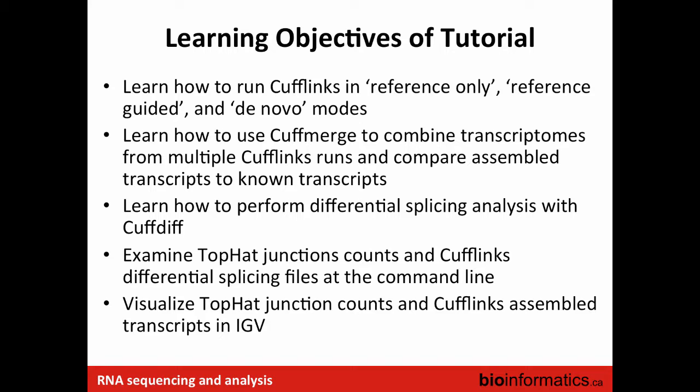The reference-only mode gave output close to one result per known transcript. Now we'll run Cufflinks again in two different ways: first telling it to use the known transcripts only as a guide — don't limit yourself to these transcripts but use the information to guide the assembly process — and then in a mode where we don't tell it anything about transcripts at all: just here are the RNA-seq reads, you figure out what transcripts are there.